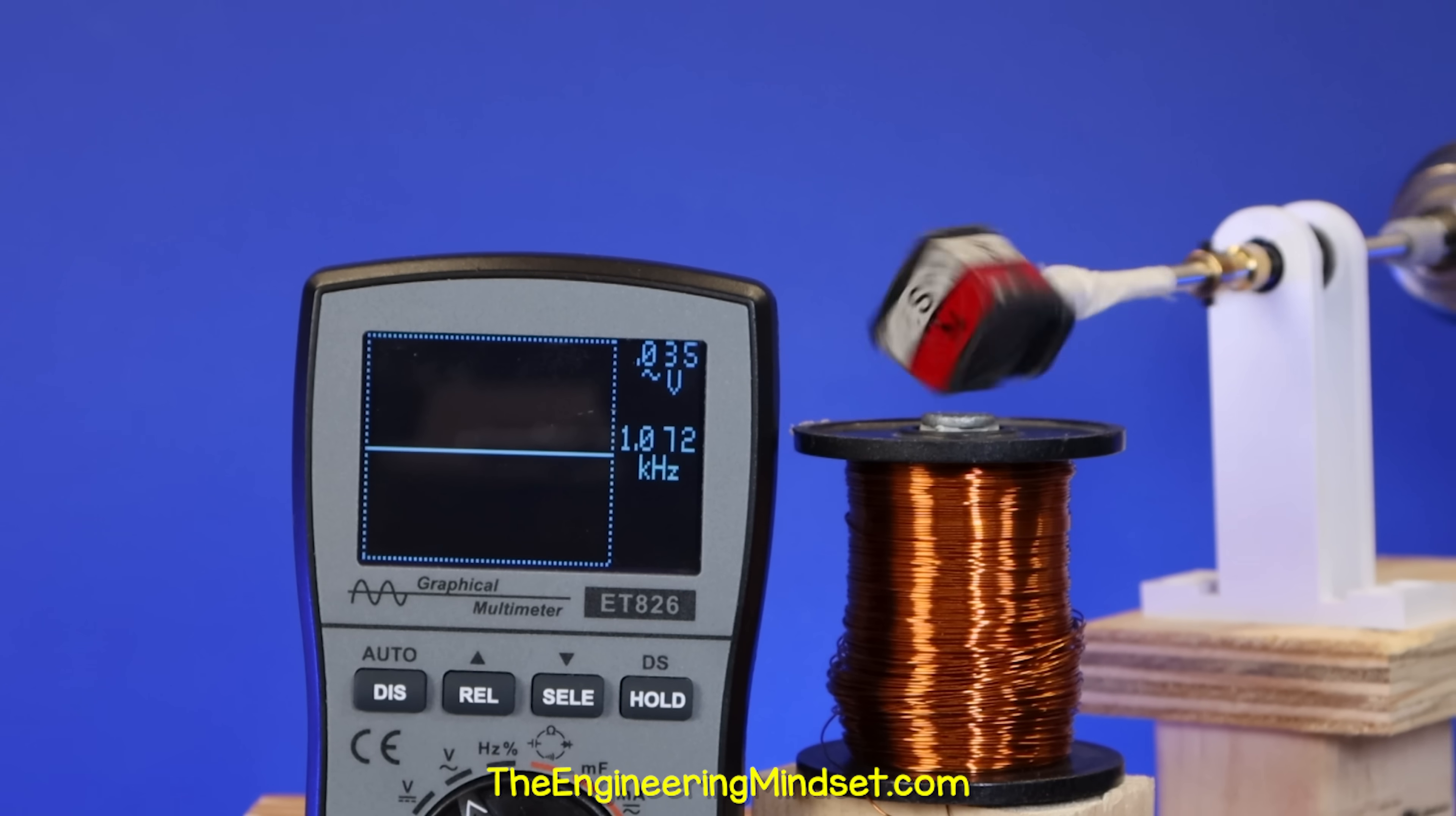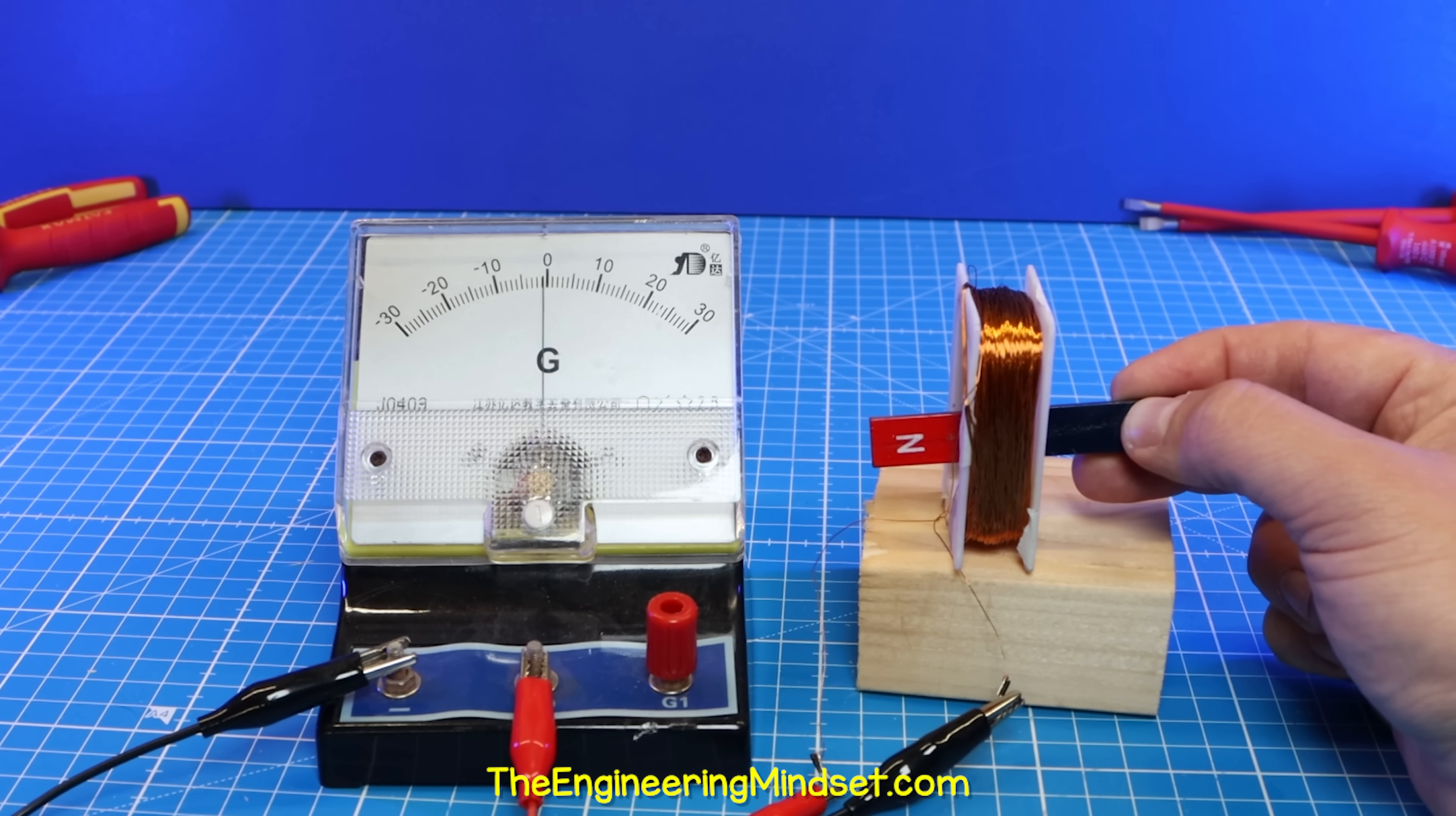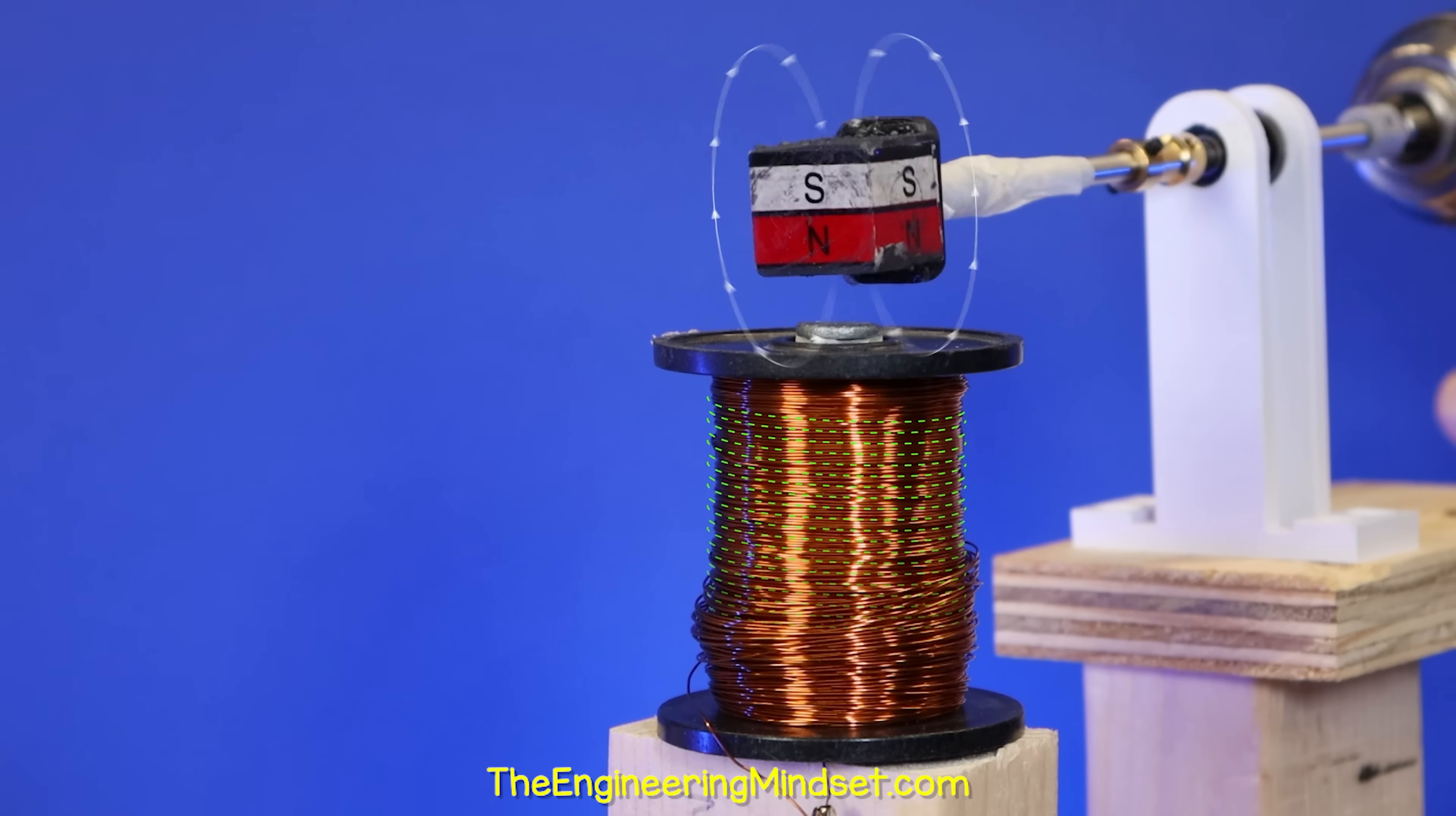If I rotate this magnet past this coil of wire, we can see it produces a sine wave. The magnetic field interacts with the electrons in the wire and forces them to move. Imagine the north pole is pushing them away and the south pole is pulling them back. The electrons are alternating their direction forwards and backwards.